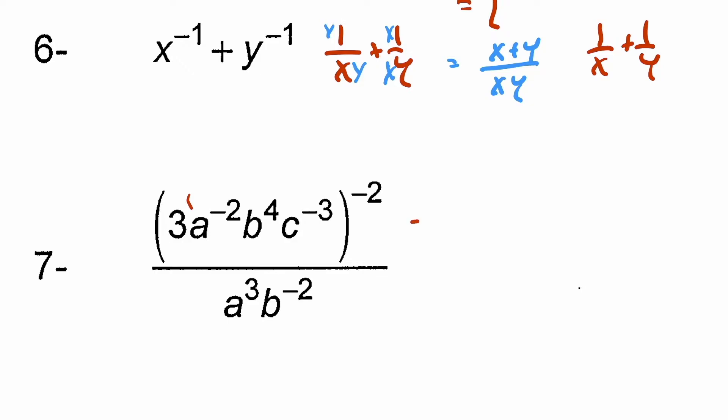So we end up with three to the negative two, a to the positive four, b to the negative eight, c to the positive six divided by a to the three, b to the negative two.